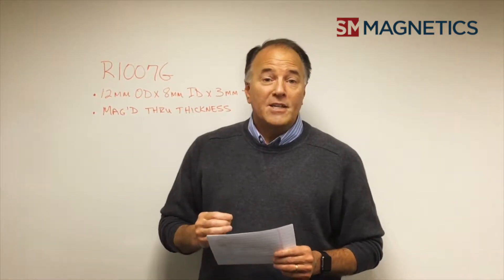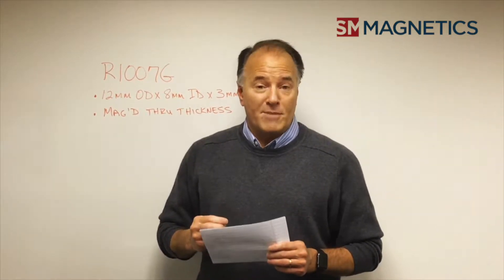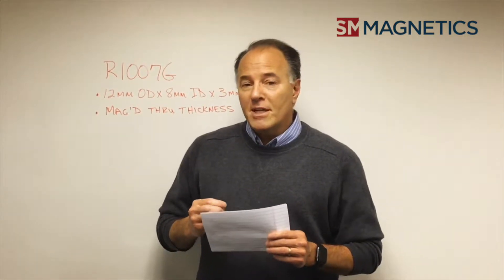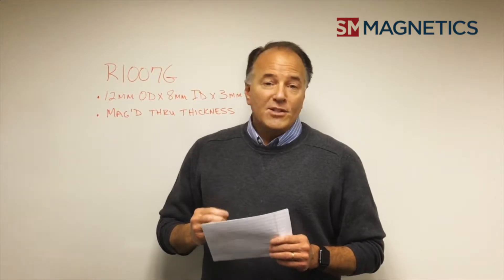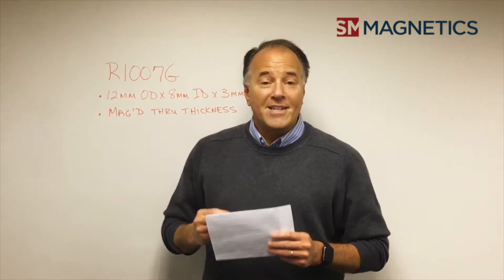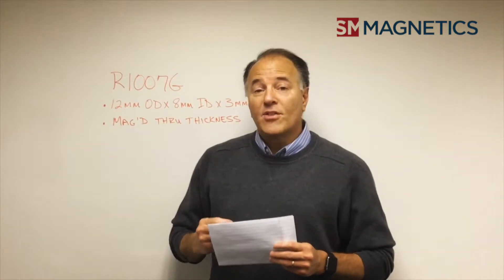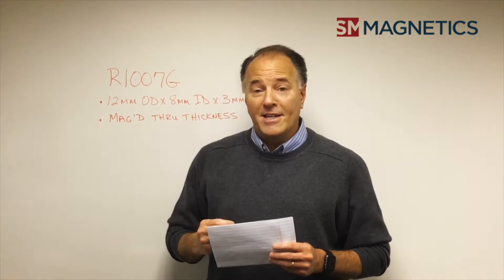What we do have in stock is a magnet that meets his OD, his outer dimension on a ring, but it doesn't meet his thickness. So he asked the question, can I stack two magnets together to have it act as one, and those two magnets equals his thickness of the one magnet that he needs?